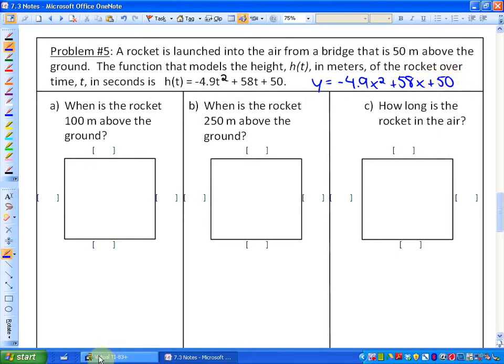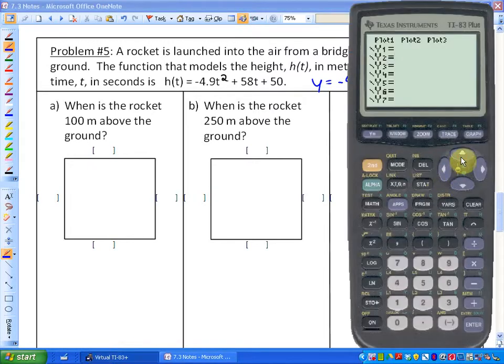So let's go ahead and just graph that function. So y is equal to negative 4.9x squared plus 58x plus 50. And I'm going to hit graph.